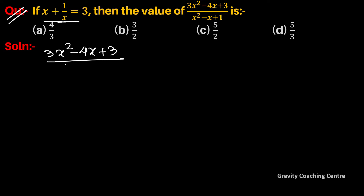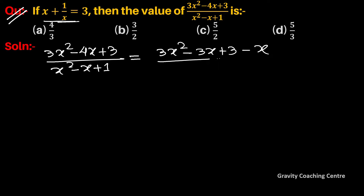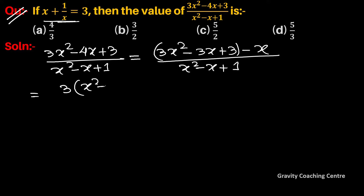Rewrite the numerator: 3x² - 4x + 3 = 3x² - 3x + 3 - x = 3(x² - x + 1) - x. So the expression becomes 3(x² - x + 1) - x, all upon (x² - x + 1).